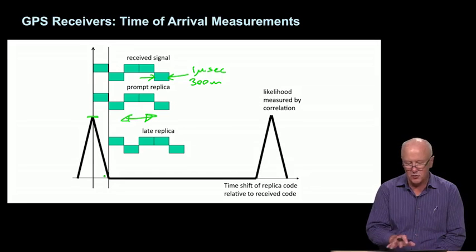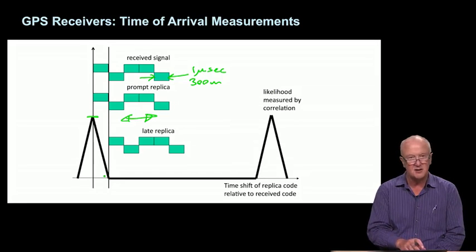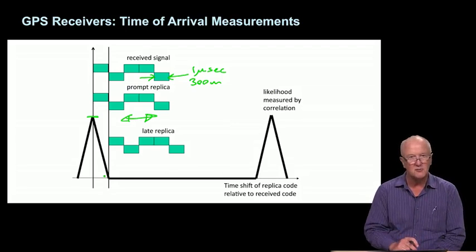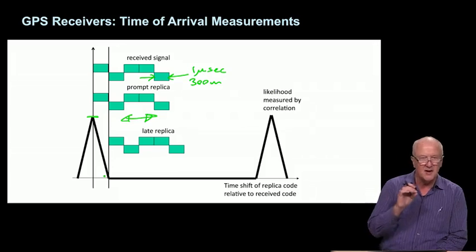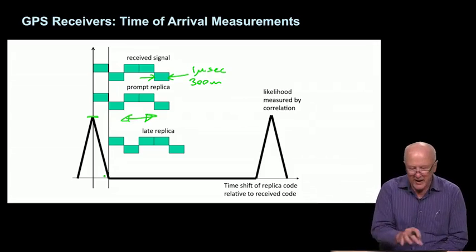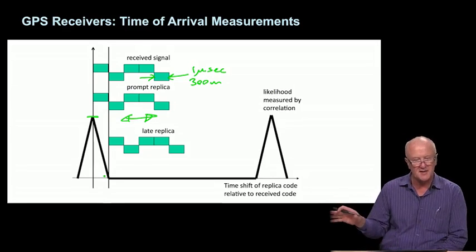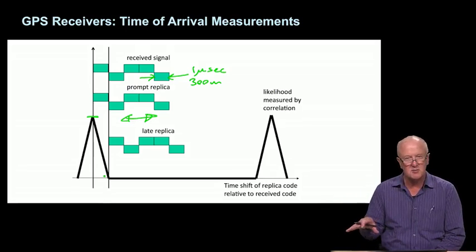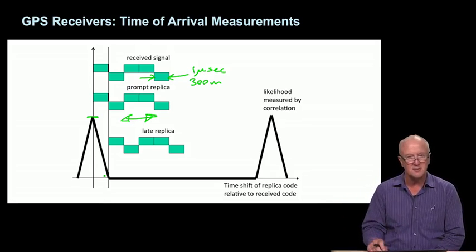The codes are designed for autocorrelation. They have a second property: not only do they have this gorgeous peaked autocorrelation function which unambiguously shows you the arrival time of the signal, they also have very low cross-correlation with the codes from other satellites. So you can go ahead and do this autocorrelation one satellite at a time without having to worry too much about the impact of the signals coming from other satellites.